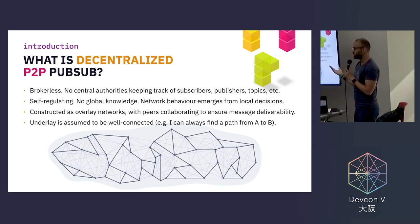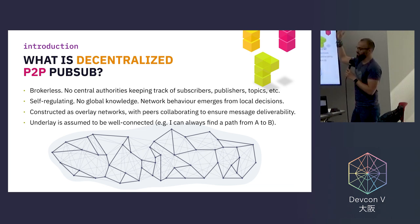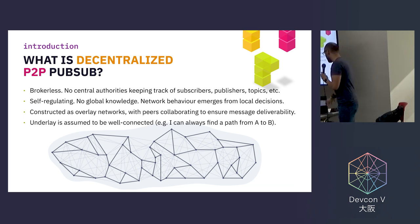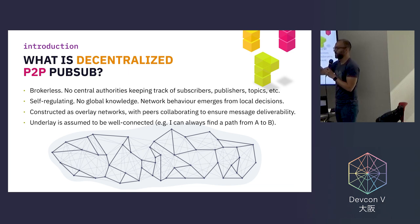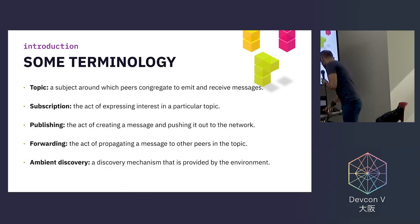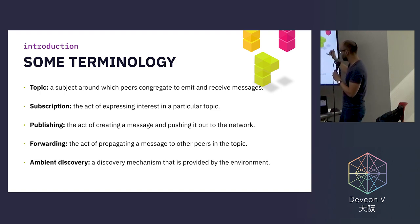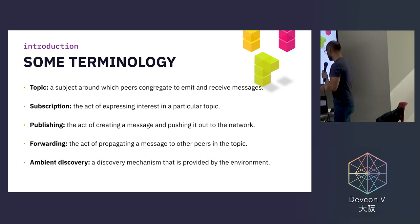Peer-to-peer PubSub is usually constructed as an overlay network with peers collaborating to ensure message deliverability. There's usually an underlay network that actually makes sure messages and traffic get routed, and algorithms will assume the underlay is well-connected — meaning I can always find a path from A to B. To set a baseline terminology: a topic is a subject around which peers congregate to send and receive messages. Subscription is expressing interest in a topic. Publishing is creating and pushing a message. Forwarding is propagating a message to other peers on that topic. And ambient discovery is something I'll cover shortly.